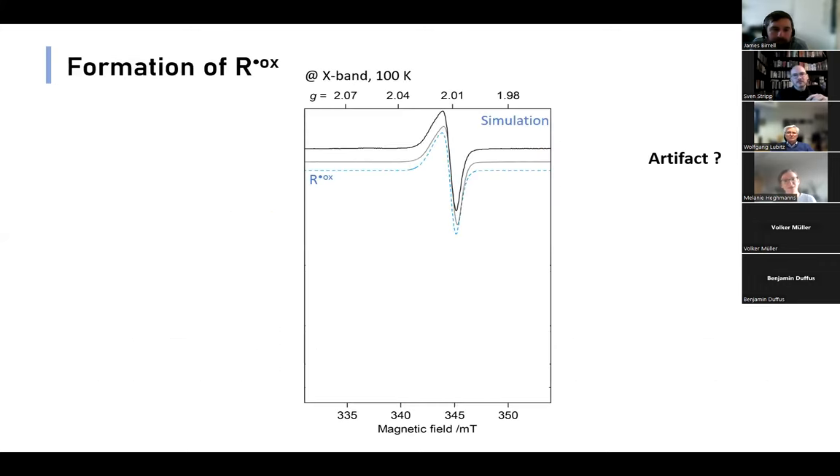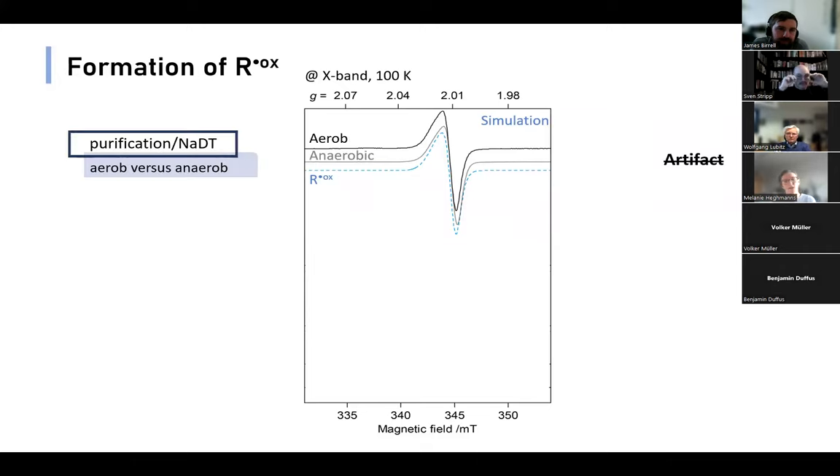To exclude that we are just detecting an artifact, we tried different purification procedures. We tested aerobic versus anaerobic purification in the absence and presence of sodium dithionite. In all cases, the signal stayed the same. Next, we also checked a different oxidant, in this case hexaruthenium chloride. And again, we observe the signal, which shows us that it's not solely dependent on oxygen.